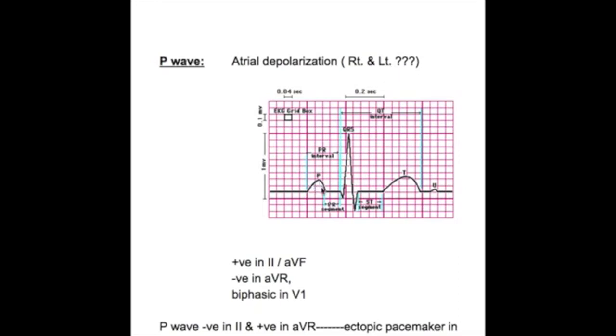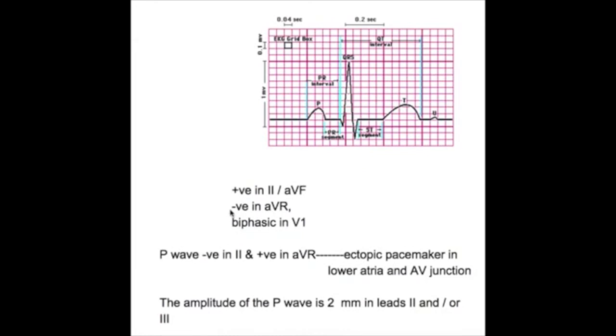Where is the right atrial depolarization and where is the left atrial depolarization? The upstroke is the right atrial depolarization and the downstroke is the left atrial depolarization. In which leads is the P wave positive? P wave is positive in lead 1, lead 2, and aVF, and is negative in aVR.